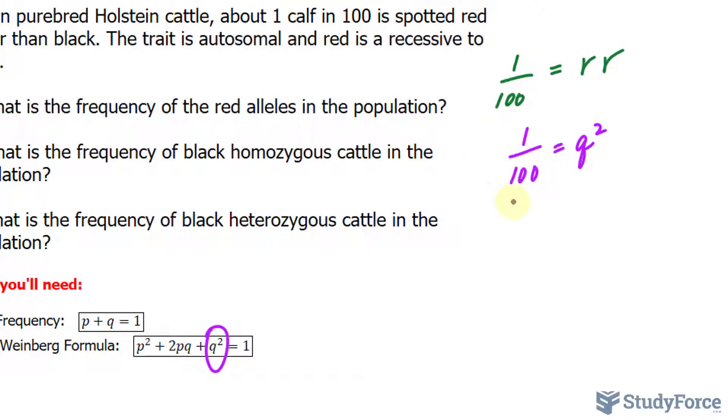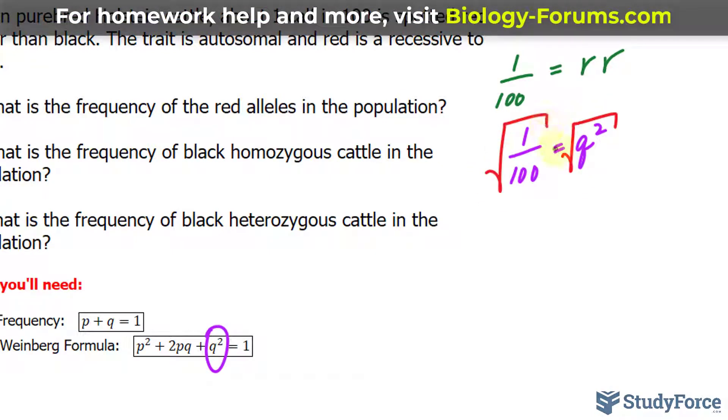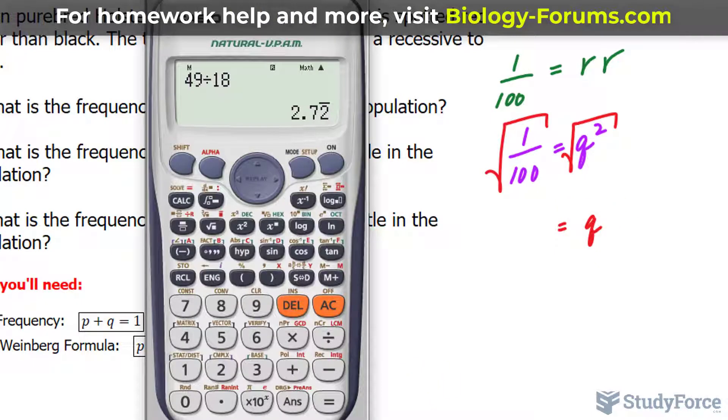By solving for q mathematically, we have found the frequency of little r in the gene pool. And we can solve this mathematically by square rooting both sides. By square rooting both sides, we end up with a q value. Let's use our calculator. 1 over 100, and then we square root that. We end up with 0.1.